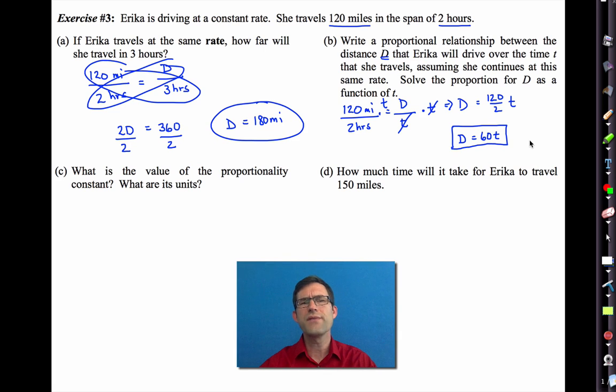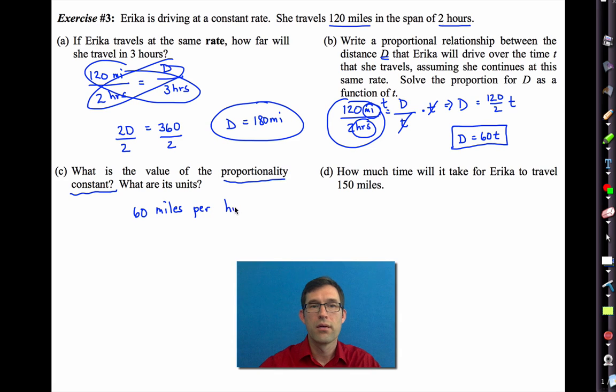Now letter C asks, what is the value of the proportionality constant? That's this guy right here. And the value of the proportionality constant is 60. What are its units? This is cool. We can track them. That's miles divided by hours, or miles per hour. That's her speed. She's traveling at 60 miles per hour.